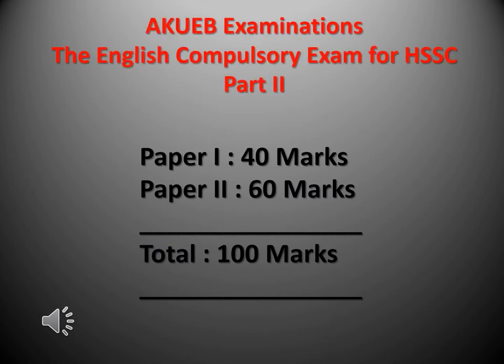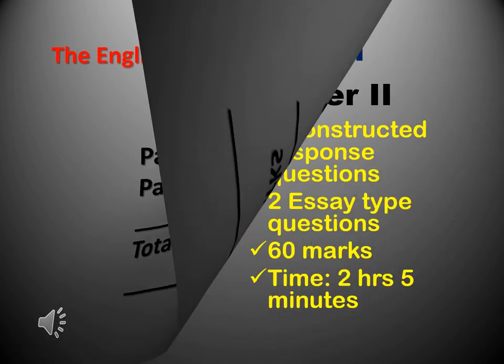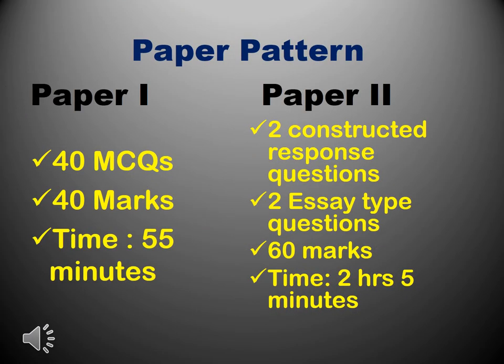The English compulsory exam for HSSC Part II holds 100 marks. Paper 1 will be of 40 marks while Paper 2 contains 60 marks. Paper 1 contains 40 marks awarded for 40 MCQs with a time of 55 minutes. Paper 2 comprises 2 constructed response questions, 2 essay type questions, offering 60 marks with a time of 2 hours 5 minutes.